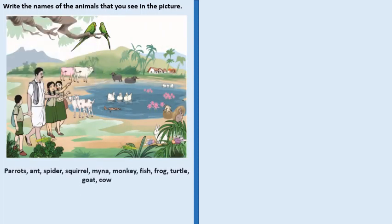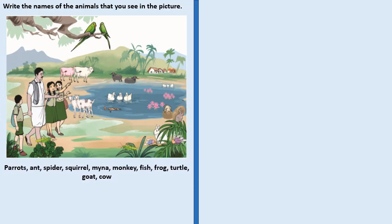Here we need to write the names of the animals that are in the picture. In the picture we can see parrots, ants, spider, squirrel, mina, monkey, fish, frog, turtle, goat and cow.